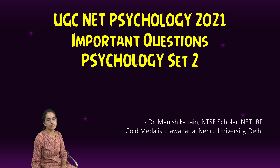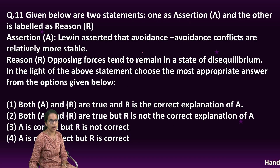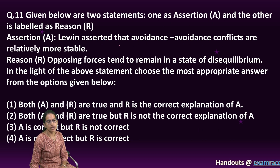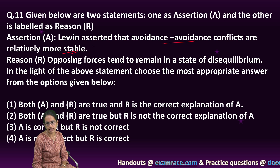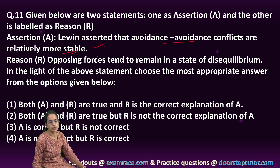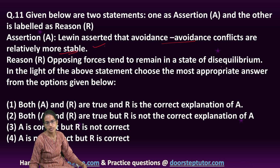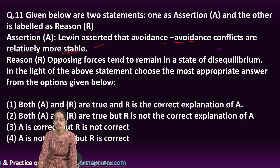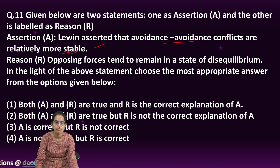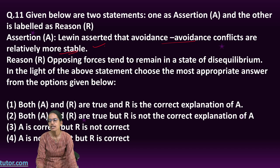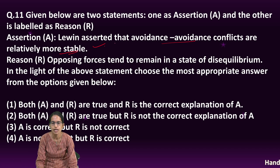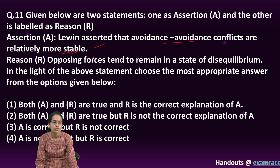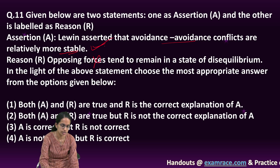Starting with psychology questions from the 2001 paper. Lewin asserted that avoidance-avoidance conflict is more stable — that's correct — and the opposing forces tend to remain in a state of disequilibrium. The approach-avoidance conflict is a state of disequilibrium; however, since avoidance-avoidance is more stable, it is relatively towards equilibrium. So the reason is incorrect but the assertion is correct.